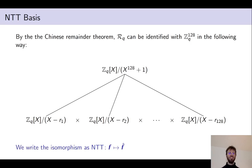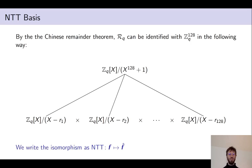The reason we call this the entity basis is that computationally, if you want to compute this map in an implementation, you do so via what is called the Number Theoretic Transform (NTT). The NTT essentially computes this isomorphism, though we still call the map the entity map.